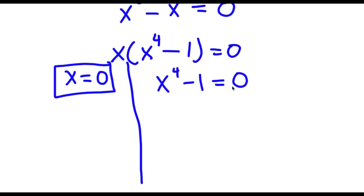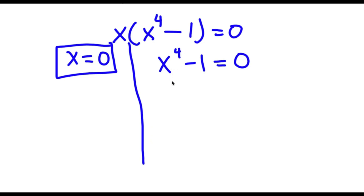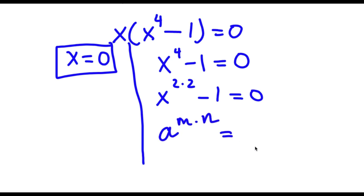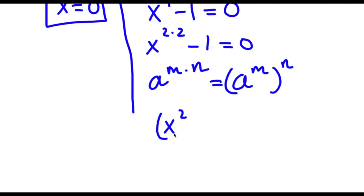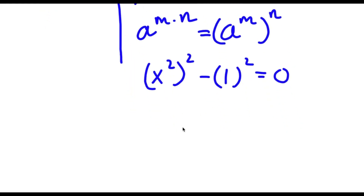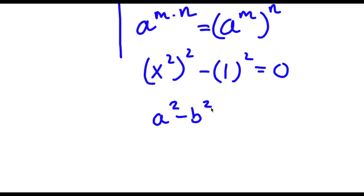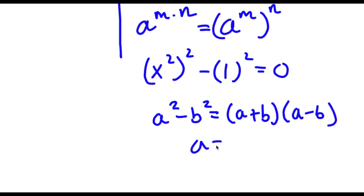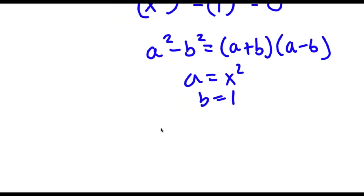So x to the power of 4 minus 1 equals 0. Now x to the power of 4 — the exponent 4 is the same thing as 2 times 2 — so I can write this as x to the power of 2 times 2 minus 1 is equal to 0. Using the power rule in reverse, this is x to the power of 2, to the power of 2. And 1 is the same thing as 1 squared. So I have x squared to the power of 2 minus 1 squared equals 0. Now applying the difference of squares, a squared minus b squared equals (a+b)(a−b), where a is x squared and b is 1, I get x squared plus 1 times x squared minus 1 is equal to 0.